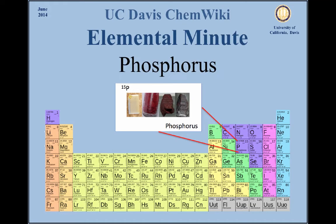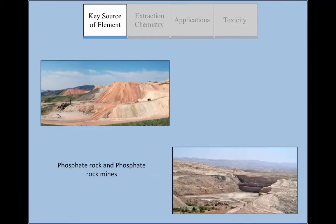Phosphorus is never found free in nature, but rather distributed in combination with minerals. Most commonly, phosphorus is found in phosphate rock, which is found in Russia, Morocco, and various U.S. states.